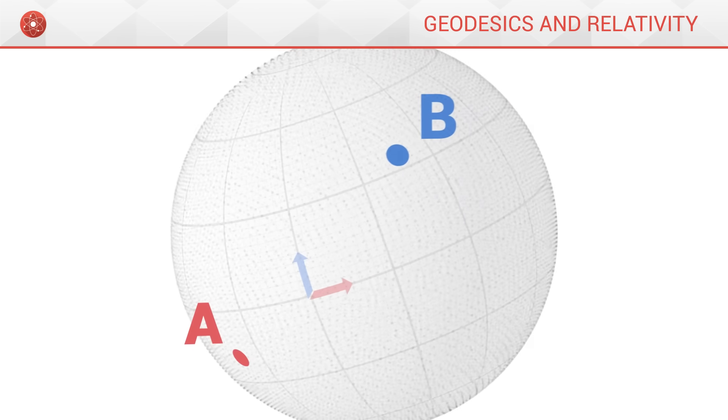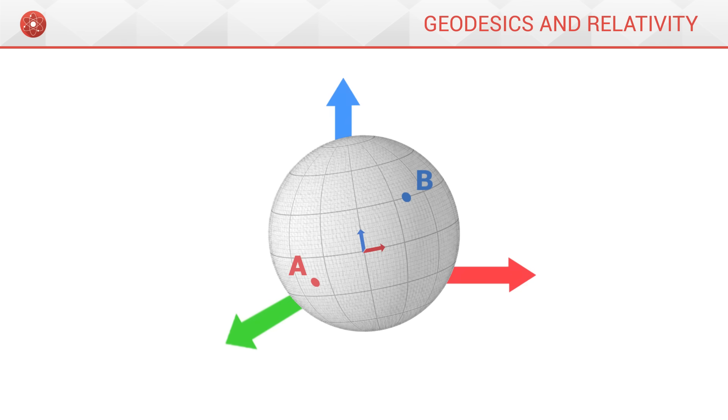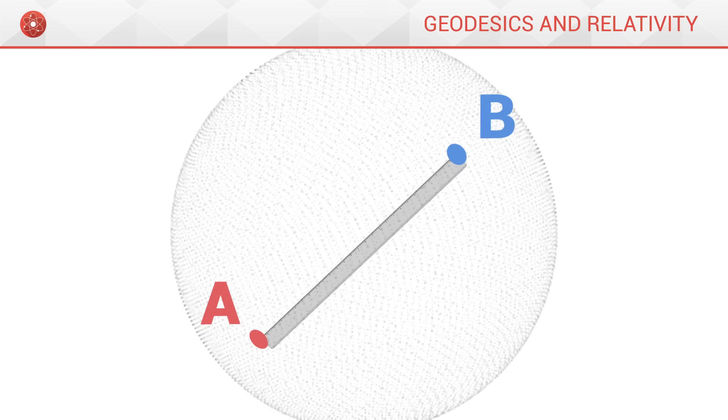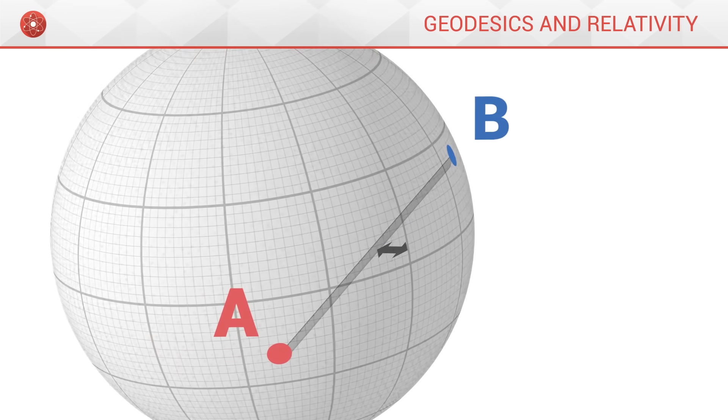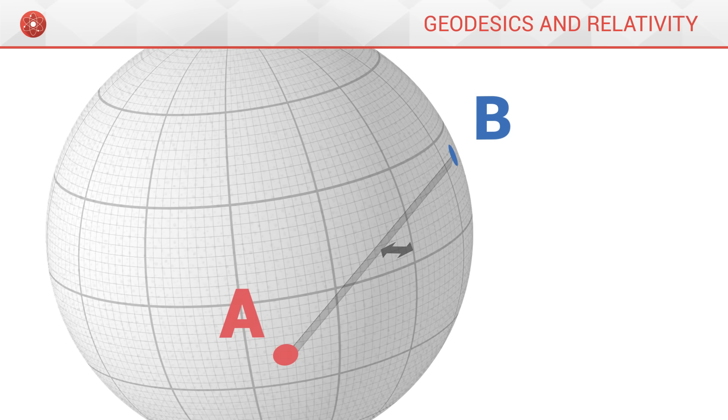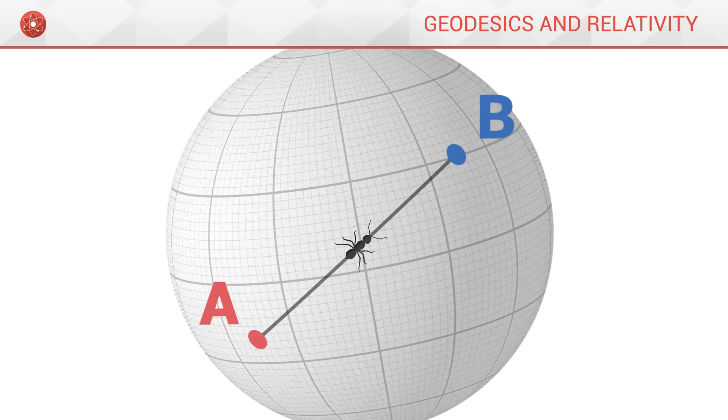Our sphere is a two-dimensional surface immersed within a three-dimensional space. The ruler measures a distance through space in three dimensions. We allow it to lie outside the surface of the sphere. On the other hand, the distance measured by the ant is two-dimensional. It is measured along the geometry of the surface.